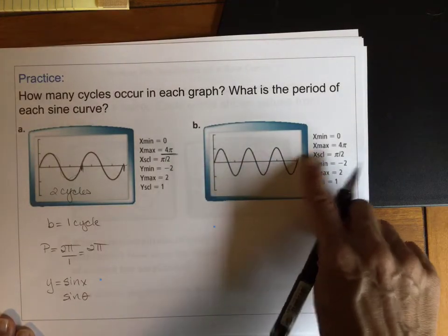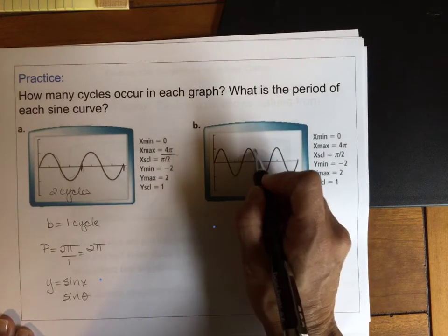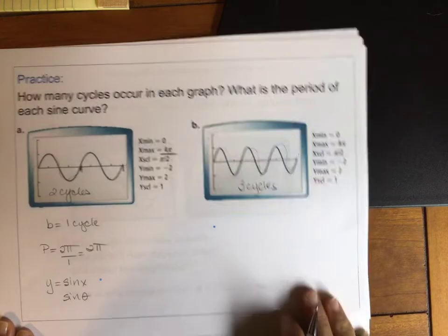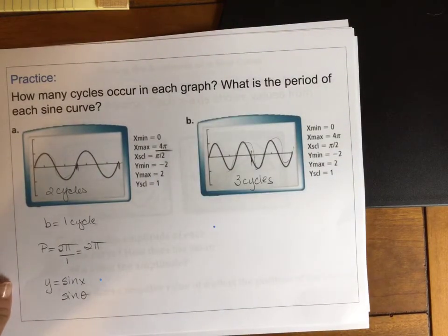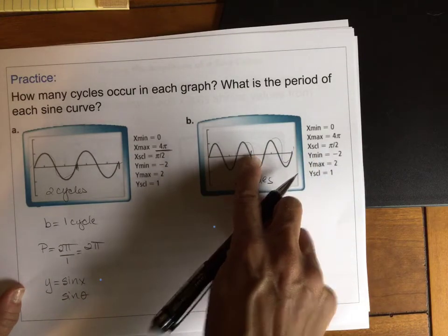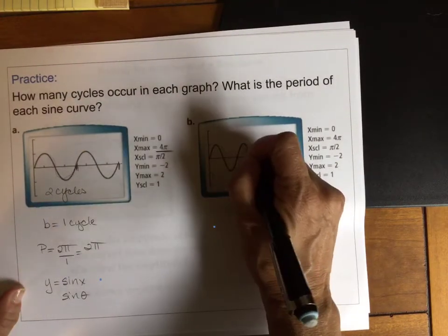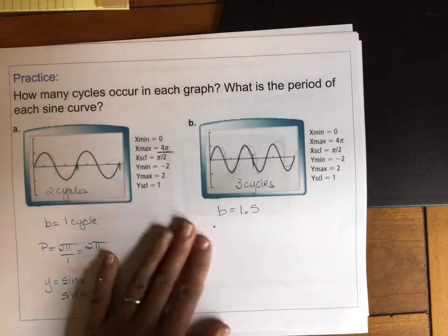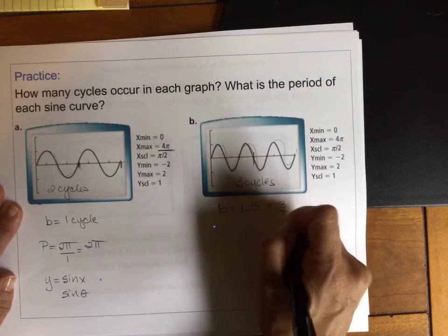Again, we have another one where I go out to 4π. So if I wanted to count the cycles in the graph, here's 1, here's 2, and here's 3. So I have three cycles in my graph. But what's my B value? This is halfway between 0 and 4π. So B is how many cycles completed between 0 and 2π. Well, I have one cycle here, and then I have just the first half of it. So my B value in this is 1.5 or might want to write that as 3 halves.